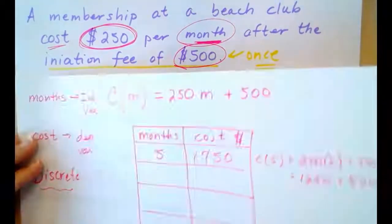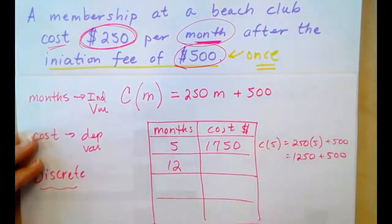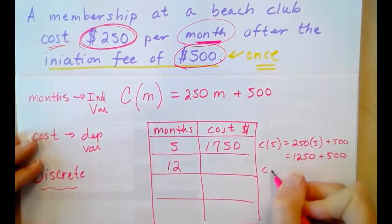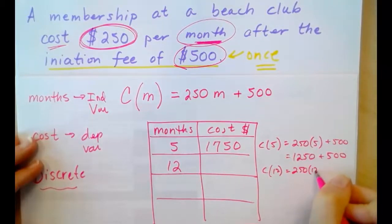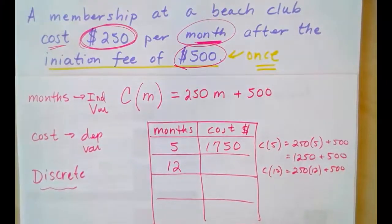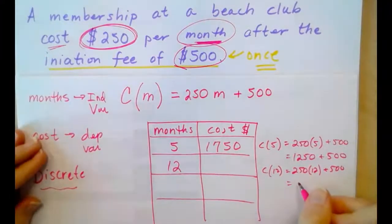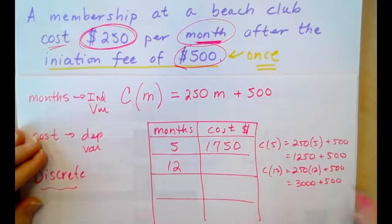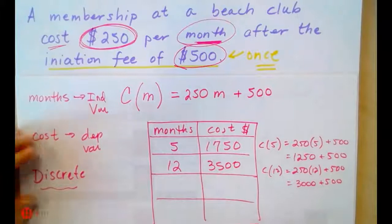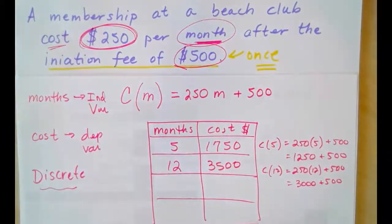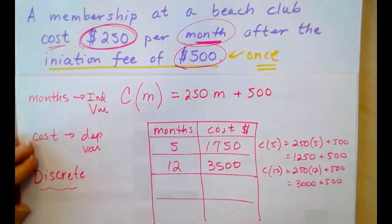Next, 12 months. How much does the whole year cost? So, that is C(12). So, 250 times 12 plus 500. 250 times 12 is $3,000. And $3,000 plus 500 is $3,500. So, after one year, it will cost $3,500 to maintain your beach club membership.